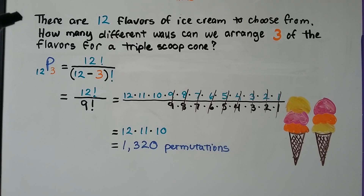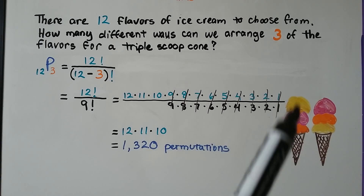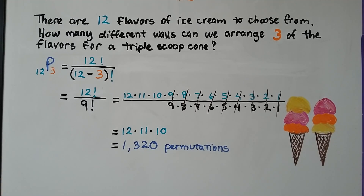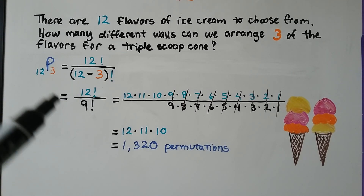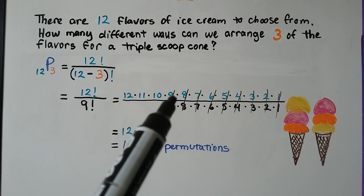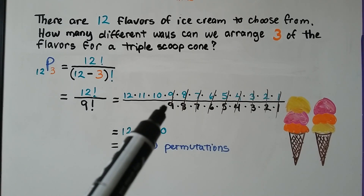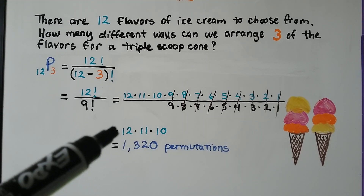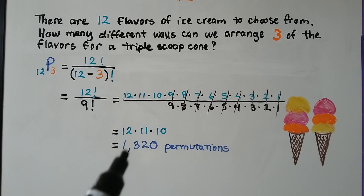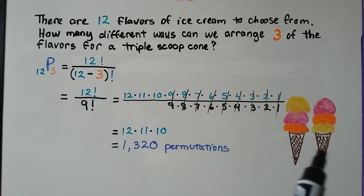For example, if there are twelve flavors of ice cream to choose from, how many different ways can we arrange three of the flavors for a triple scoop cone? We have 12P3, which is twelve factorial over twelve minus three factorial — that's twelve factorial over nine factorial. Writing out twelve times eleven times ten times nine and so on, all the way down to one, over nine factorial starting from nine down to one — those all cancel each other out — we're left with twelve times eleven times ten. That means there are 1,320 different ways to arrange the ice cream to make a triple scoop cone if there are twelve flavors.